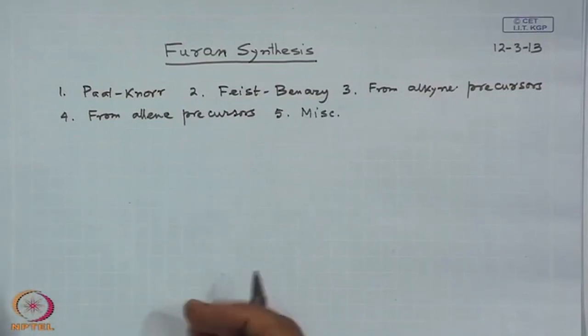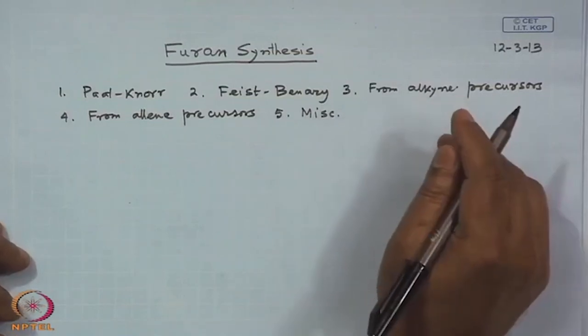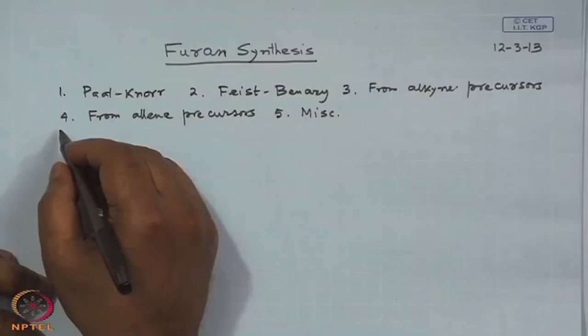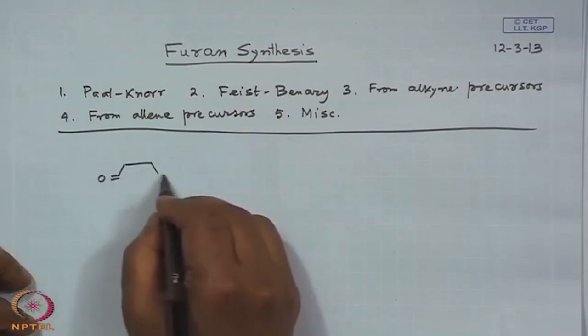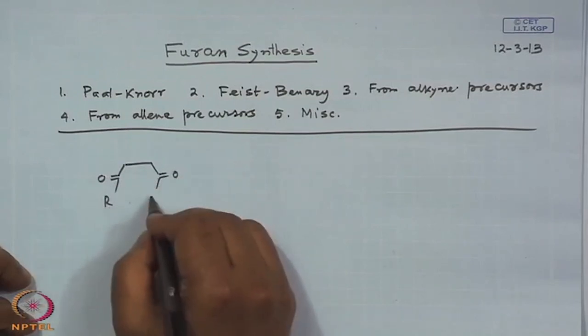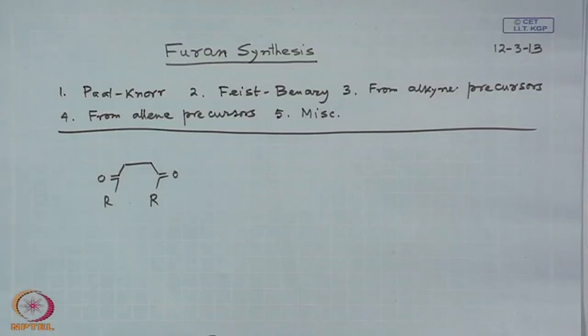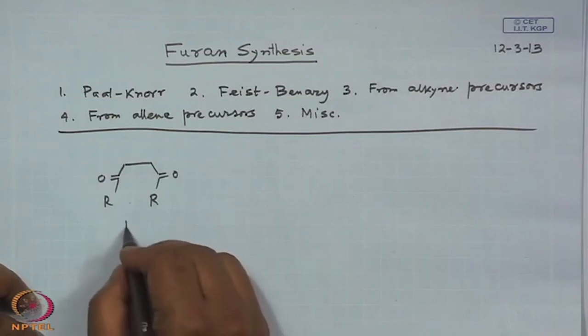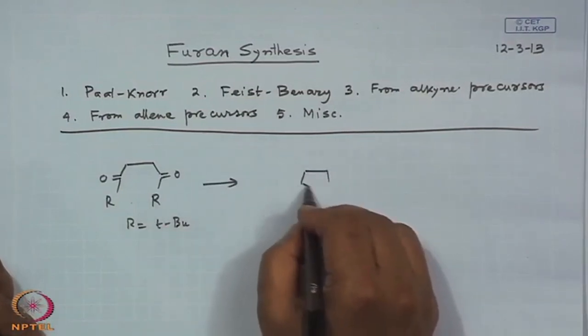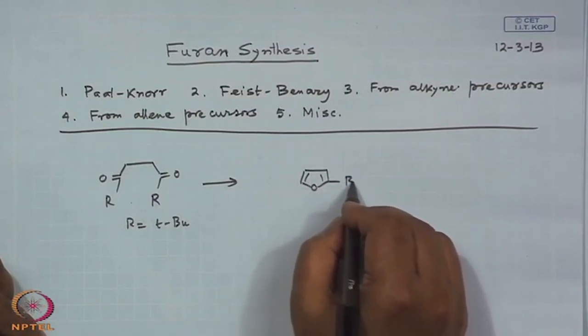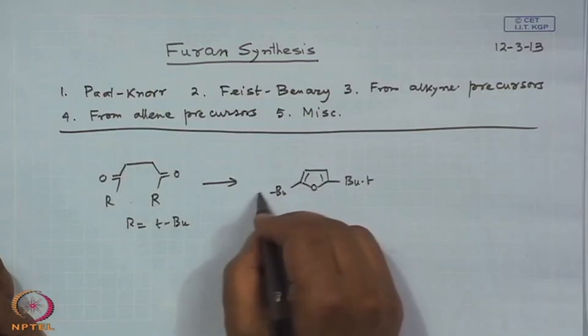I have deliberately omitted the famous class of intramolecular Wittig reaction — all of us know that a double bond can be created by a Wittig reaction, and if you have an intramolecular version you can also get a cyclic compound. Quickly: the first one — Paal-Knorr — requires a 1,4-diketone. That is what you have to remember.